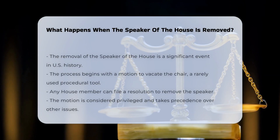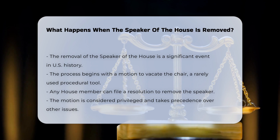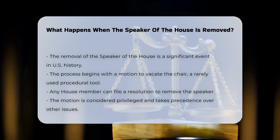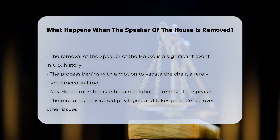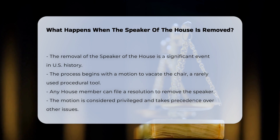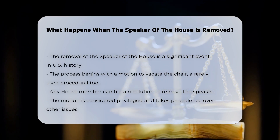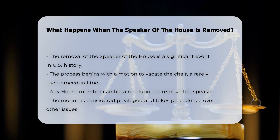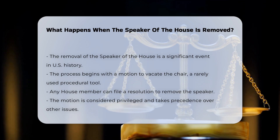When the Speaker of the House is removed, it marks a significant and unprecedented event in U.S. history. The process begins with a motion to vacate the chair, a rarely used procedural tool that allows any member to file a House resolution to remove the Speaker. This motion, if introduced and announced on the House floor, is considered privileged and takes priority over other issues. It requires a majority vote to succeed and oust the Speaker from their leadership post.